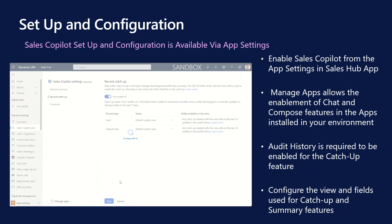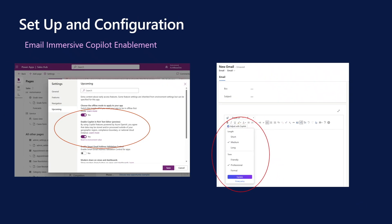The configuration option around field selection and related fields will be enhanced in future releases. Currently, to enable the Immersive Email Copilot feature, you will need to navigate to the Maker Portal and edit the application where you wish to enable the Copilot Immersive Experience. Within the App Settings area, select Upcoming and enable the feature. Remember to save and publish. The Immersive Copilot option will now appear in the Rich Text Editor toolbar.